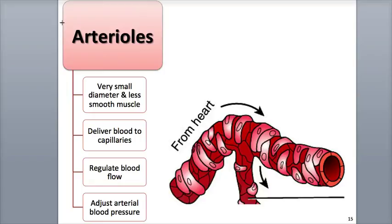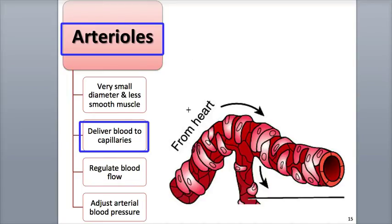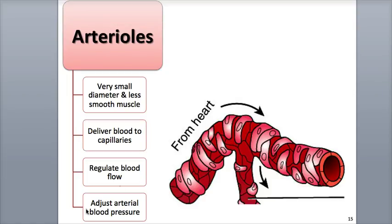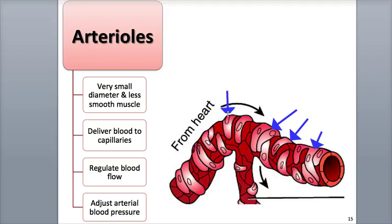Arterioles are microscopic arteries that deliver blood to the capillary beds located around the body's tissues and organs. They are incredibly abundant, numbering about 400 million. Their tunica interna is thin, and their internal elastic lamina is fenestrated, meaning it contains small pores. Their tunica media contains one or two layers of smooth muscle arranged in a circular fashion around the vessel, visible in illustrations as small smooth muscle belts surrounding the arterial wall.